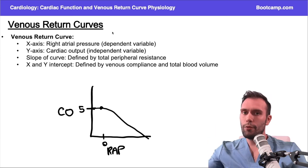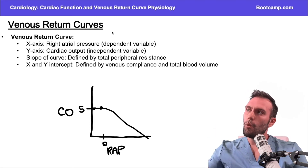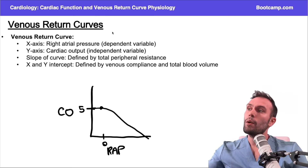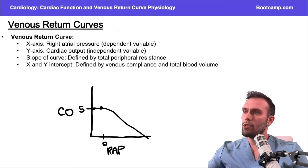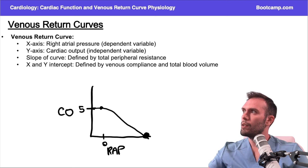In a cardiac function curve, you're looking at cardiac function — you want to see what happens to cardiac output when you change right atrial pressure. Here, we're looking at what happens to right atrial pressure when I change cardiac output. Now a very important point to remember is this point down here.